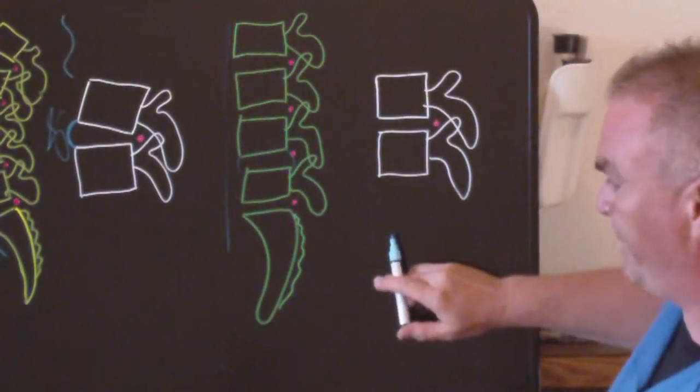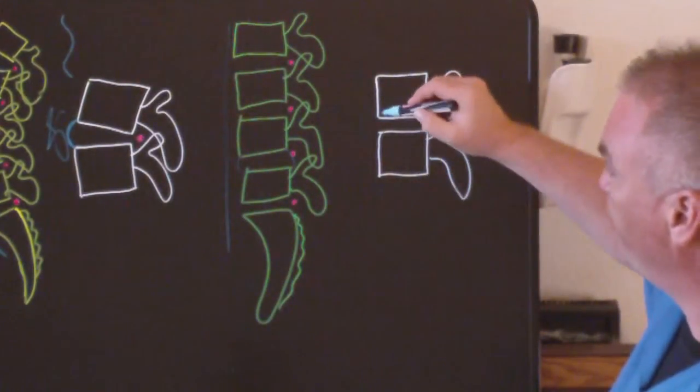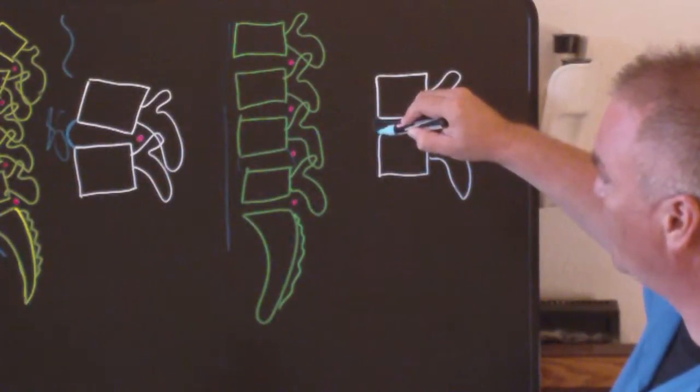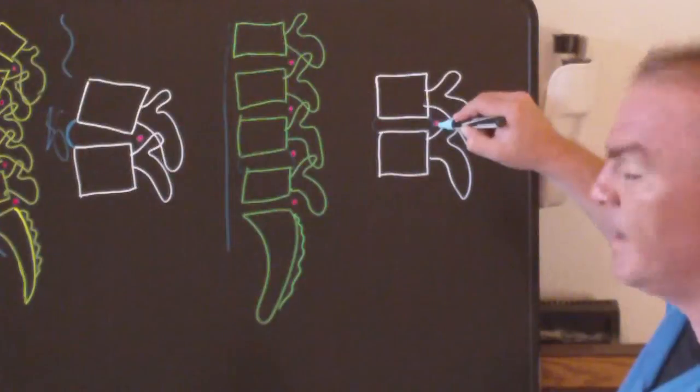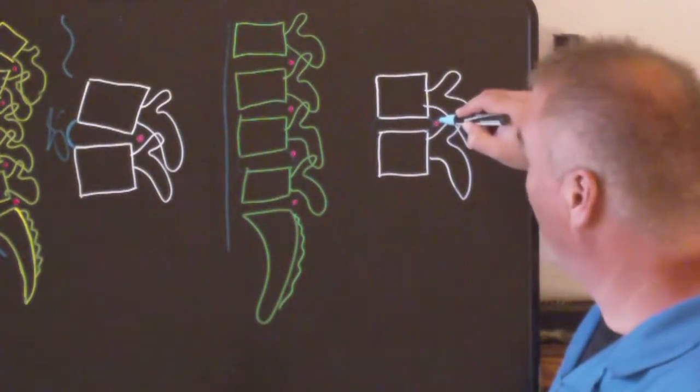As weight's coming down and weight's coming up, the disc is going to bulge just as much here as it is back here, and that's going to end up hitting that nerve.